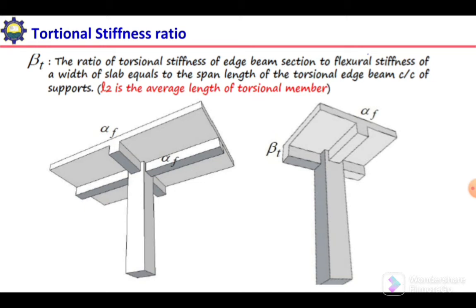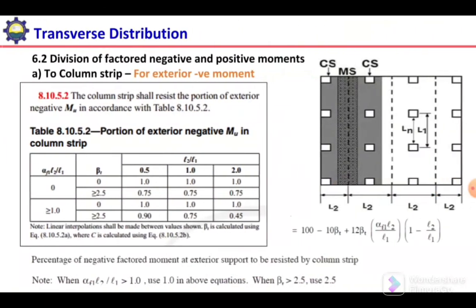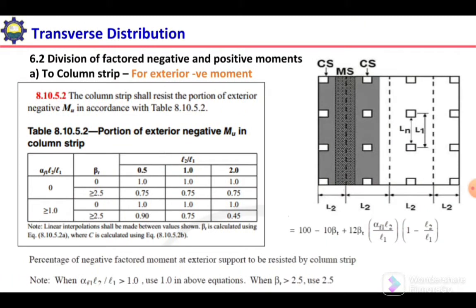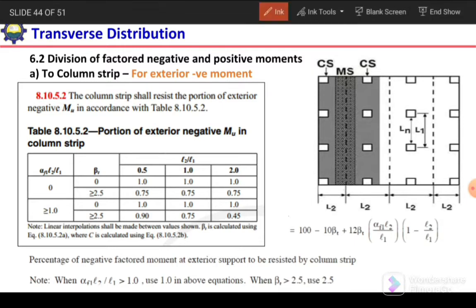Assalamu alaikum. I am Dr. Muhammad Tahir. In the previous video, we discussed the procedure for the direct design method. While discussing the distribution of exterior negative moment to the column strip, we encountered one factor, beta_t. That beta_t was involved in selecting the moment coefficient for the column strip in the case of exterior negative moment. I left this point to discuss later, so in this video we are going to discuss what beta_t is and how we can calculate it.